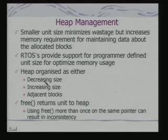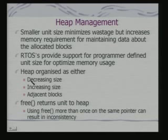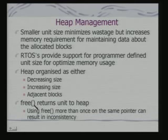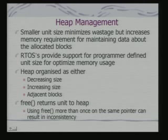The heap is organized in terms of decreasing size, increasing size, or adjacent blocks. The root node of the heap points to the largest free block available. When returning memory via free, the type of the pointer in C is important, because the runtime environment uses it to know the exact size of memory to be freed and returned to the heap. If you call free on the same variable more than once, the memory area may have been allocated for another data structure, and freeing it again can cause an inconsistency and a fault that surfaces later.